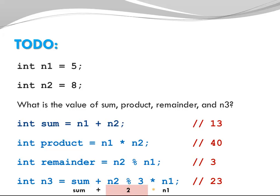The next operator to be executed is my multiplication. 2 times n1, n1 is 5. 2 times 5 is 10. My next operator is from the plus minus category, so sum plus 10. My sum, we figured that out earlier, is 13. My sum 13 plus 10 is 13 plus 10, and that is 23. So 23 is the value that is going to be assigned to my variable n3.